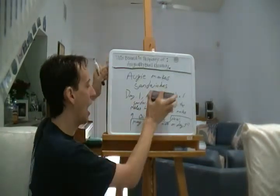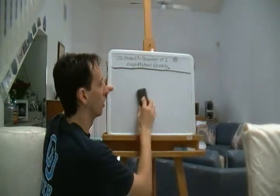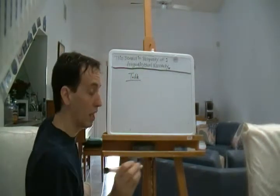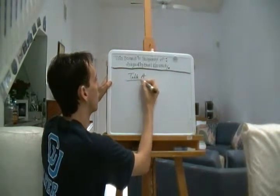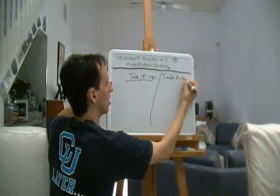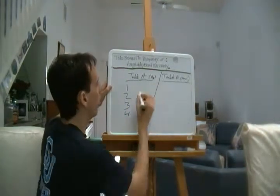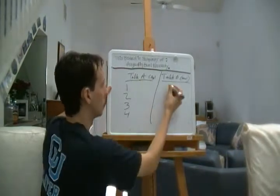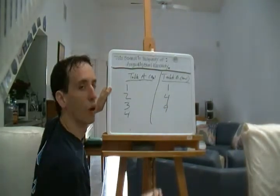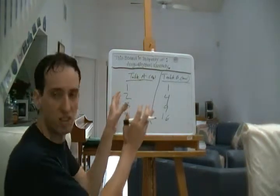Now that we have it written verbally, we can write a table of values — similar to those sets we made earlier. Table A is 'day': day one, day two, day three, day four. Table B is 'sandwiches': on day one we made one sandwich, on day two four sandwiches, on day three nine sandwiches, on day four sixteen sandwiches. This is a numerical representation of that same function.